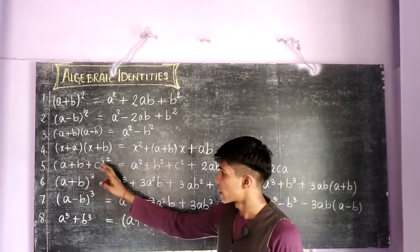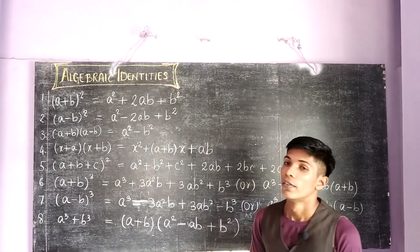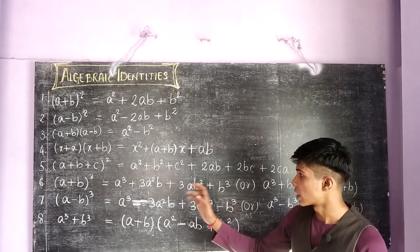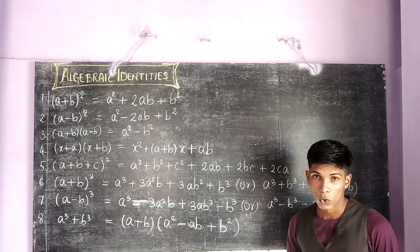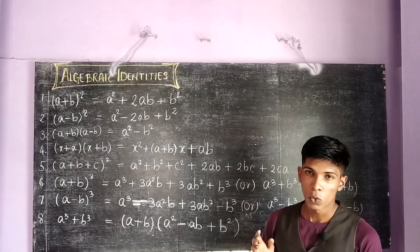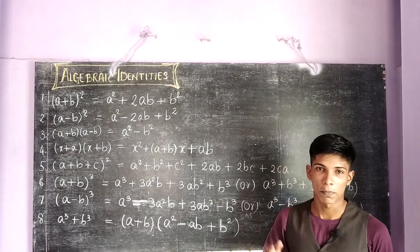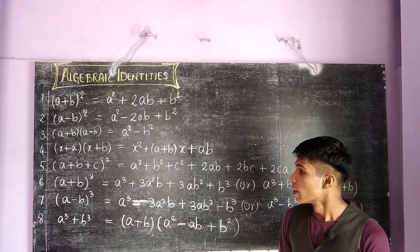The fifth identity which we are going to see is a plus b plus c whole square, which equals a square plus b square plus c square plus 2ab plus 2bc plus 2ca, which is in a cyclic form of a plus b plus c.